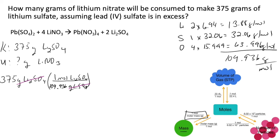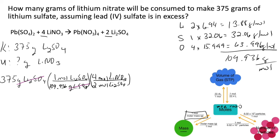Going back to the mole map, I am now in moles of lithium sulfate, but what I want is grams of lithium nitrate. So we use the mole ratio to change from moles of lithium sulfate to moles of lithium nitrate. We put lithium sulfate at the bottom — the substance we want to get rid of — and lithium nitrate at the top, since that's the substance we want to keep. We use the chemical equation to determine the numbers: the coefficient for lithium nitrate is 4, so we put 4 in the numerator, and the coefficient for lithium sulfate is 2, so we put 2 in the denominator. This cancels out moles of lithium sulfate and leaves moles of lithium nitrate.